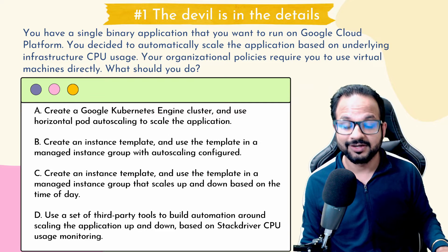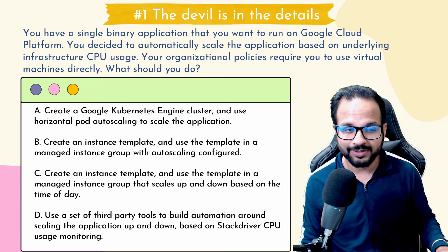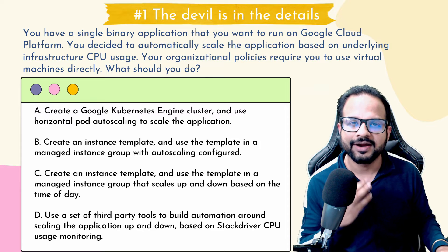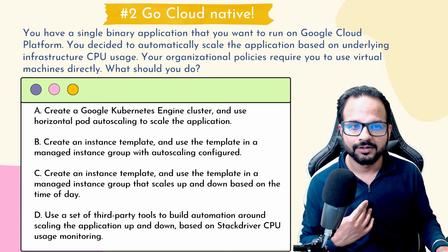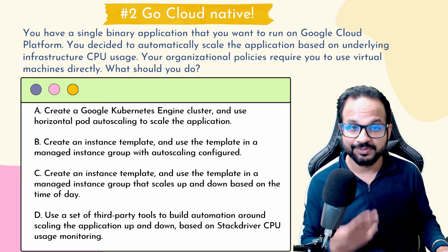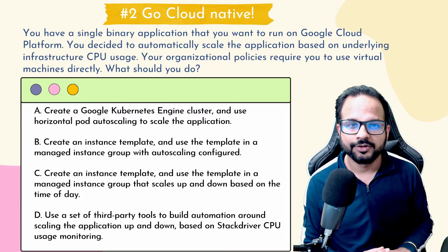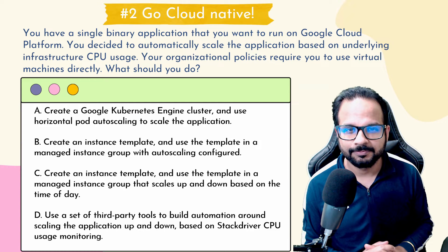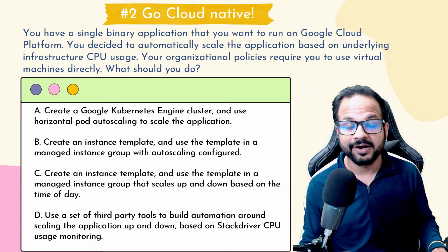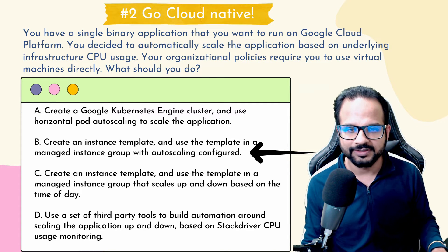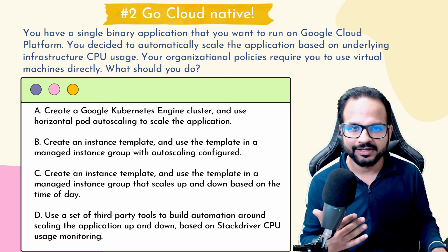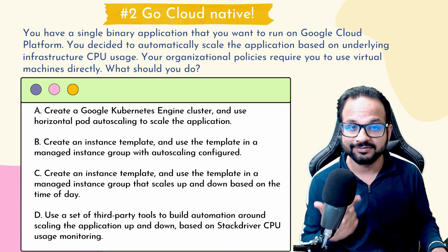The fourth option suggests using a third-party tool to build automation around scaling the application up and down. It does mention CPU usage monitoring. This leads us to tip number two: go cloud native. That means you should be using GCP native services wherever possible. You shouldn't be recommending a third-party or open source tool unless the GCP service provided doesn't satisfy the need. Here, the instance template with auto scaling configured — the second option — is the ideal choice. So to recap: tip one is to read all the keywords and requirements very carefully, and tip two is to use cloud native services wherever possible.